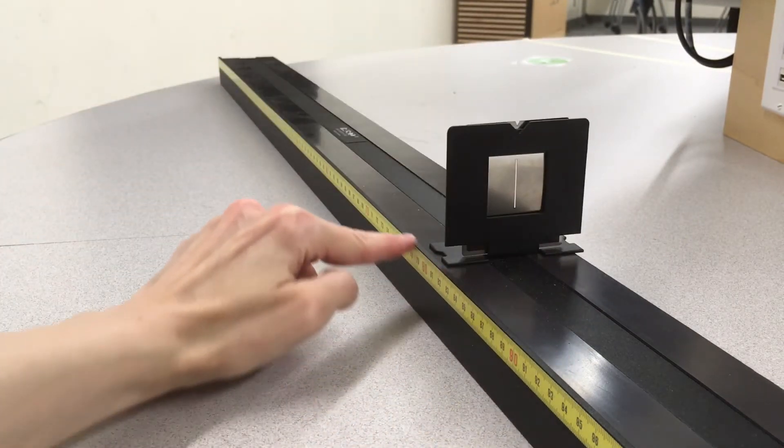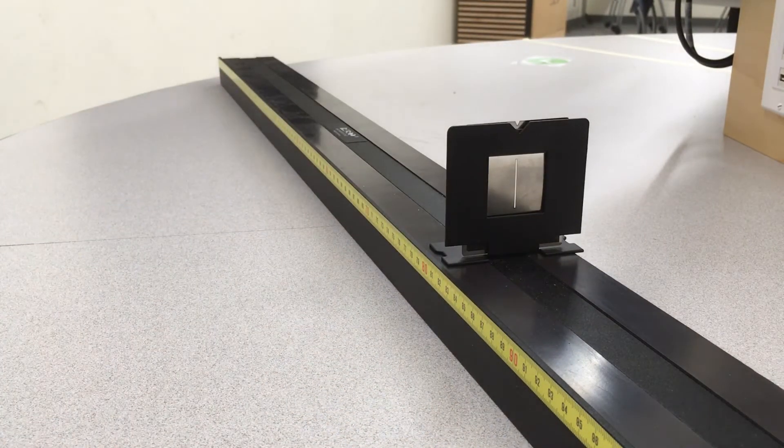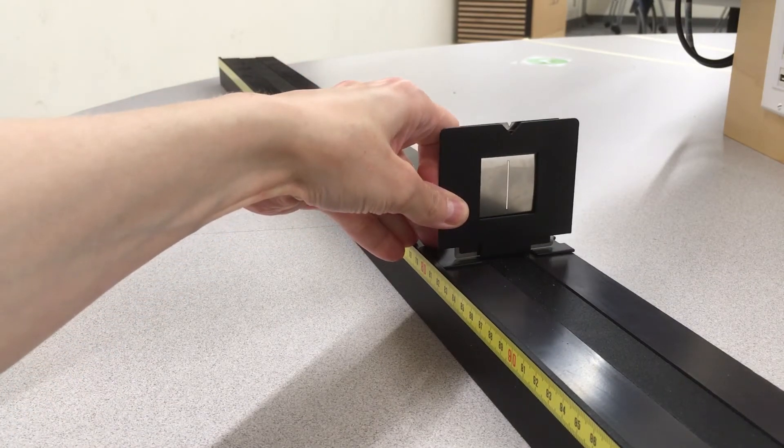Second, note the lip running all the way along the optical rail. The component holders should all be pushed firmly against this.